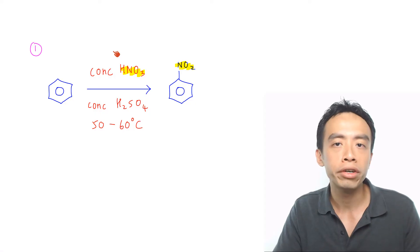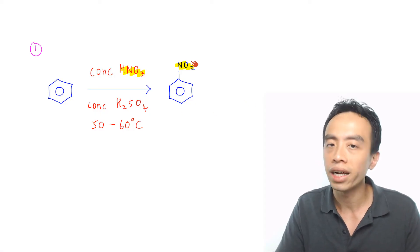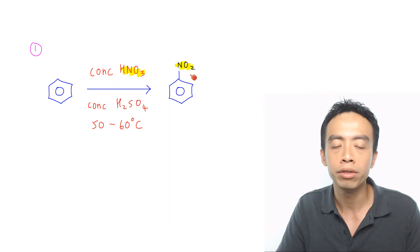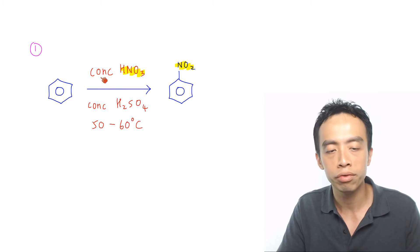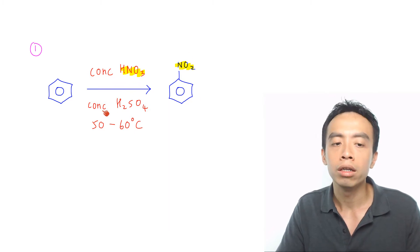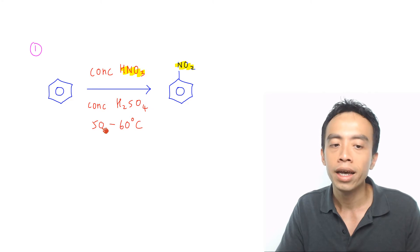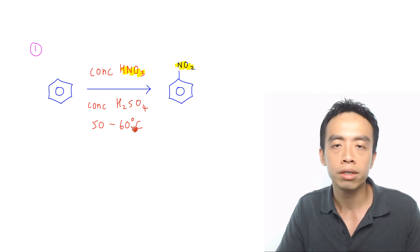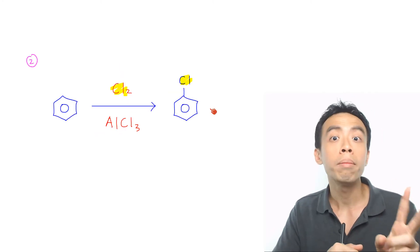The first must-know reaction of benzene is the nitration of benzene to form nitrobenzene. This reaction is done using concentrated HNO3 in concentrated H2SO4 as catalyst at 50 to 60 degrees C.